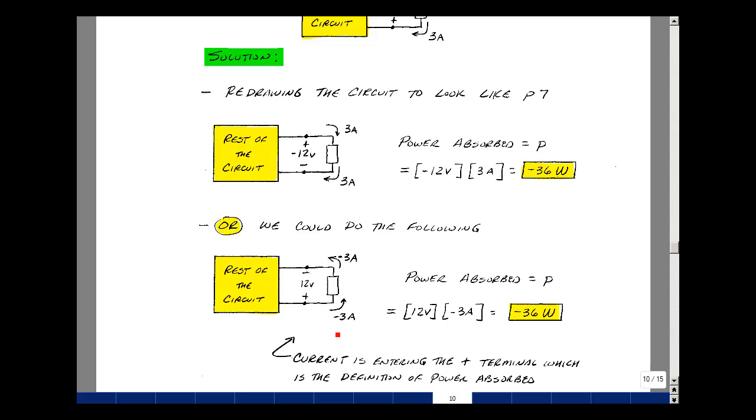And when I do that, I change the sign of the current. In this case it becomes minus 3 amps. So now the power absorbed is 12 times minus 3. And again, it's minus 36 watts. But things didn't change in terms of our answer if we make changes like this in the circuit, because what we're doing is we're creating the same effect.